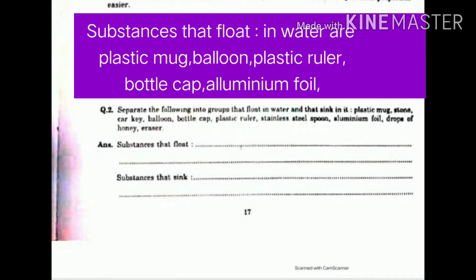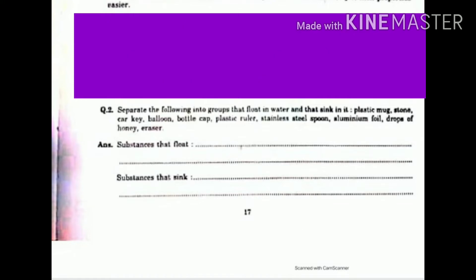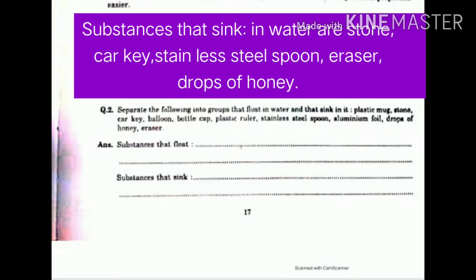Substances that float in water are plastic mug, balloon, bottle cap, aluminium foil, etc. Substances that sink in water are stone, car key, plastic ruler, stainless steel spoon, eraser, drops of honey.